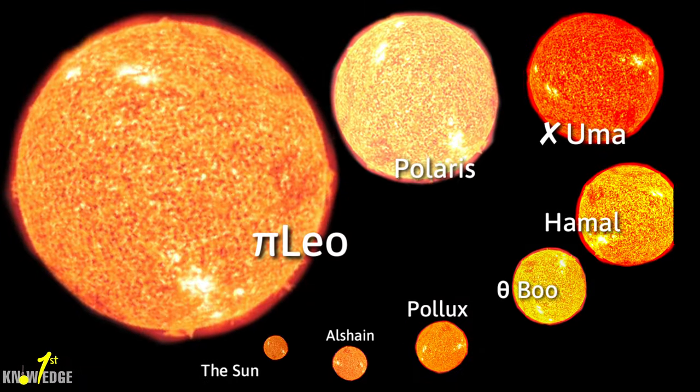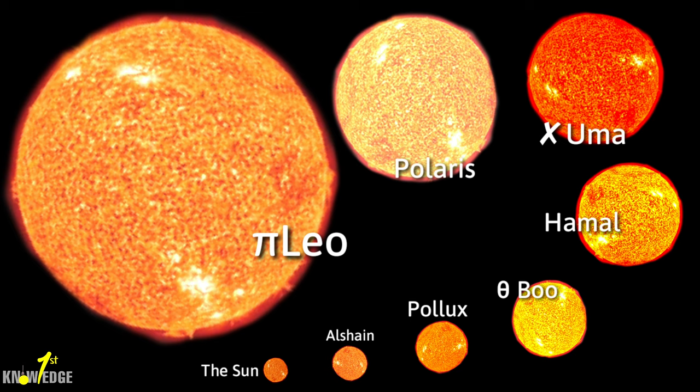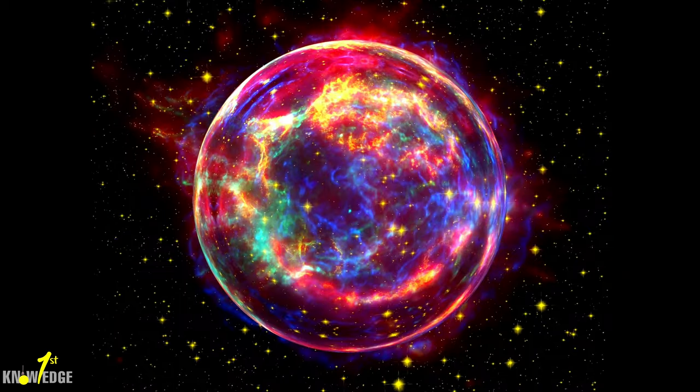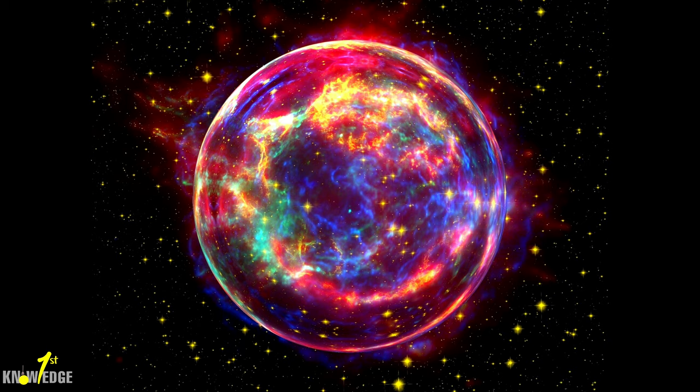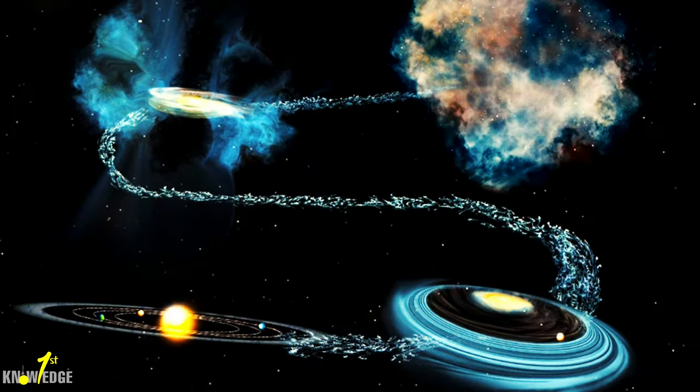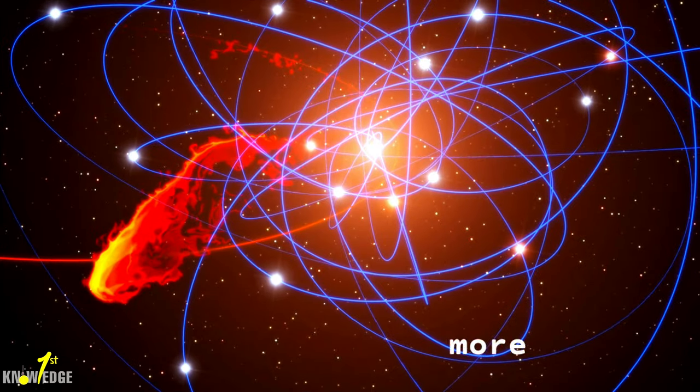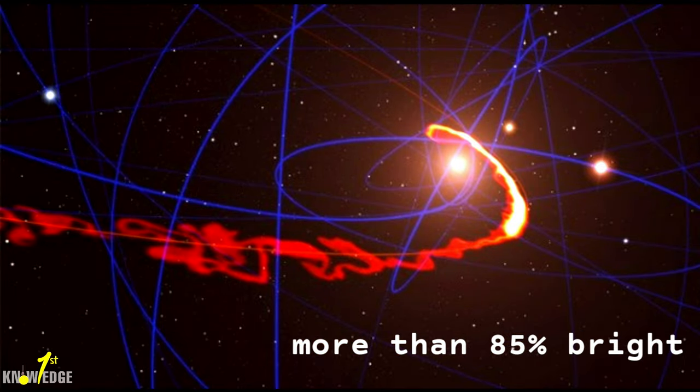Spectral class V means that the sun, like most stars, is a main sequence star. That is, energy is produced by the fusion of hydrogen nuclei and helium nuclei. Our galaxy has over 100 million G2 class stars. Considered a small and relatively insignificant star, the sun is more than 85% brighter than other stars in the galaxy.